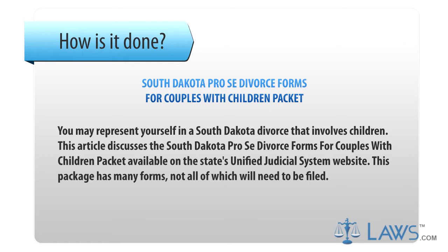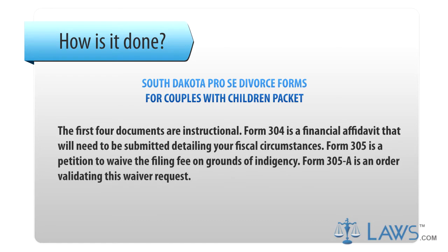This package has many forms, not all of which will need to be filed. Step 1: The first four documents are instructional. Form 304 is a financial affidavit that will need to be submitted detailing your fiscal circumstances. Form 305 is a petition to waive the filing fee on grounds of indigency. Form 305A is an order validating this waiver request.